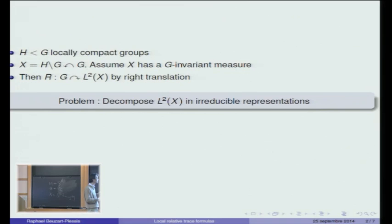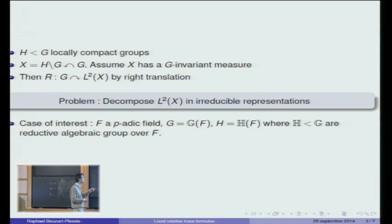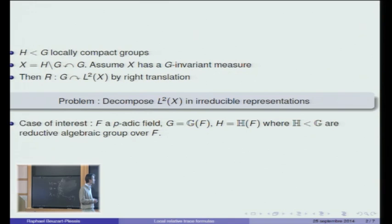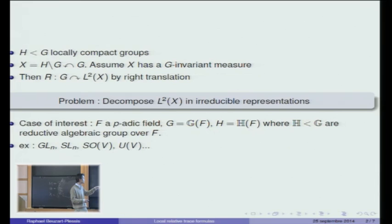This question is very broad and general, and it's very difficult in general to handle. But I will focus on the particular case of arithmetic interest, namely when G and H are what we call reductive p-adic groups. This means you have a p-adic field F that is a finite extension of Qp, and two reductive algebraic groups, bold H and bold G, such that G and H are the F-points of these reductive algebraic groups. Examples of reductive algebraic groups include GLN — the group of n by n invertible matrices — SLN, or special orthogonal groups or unitary groups.